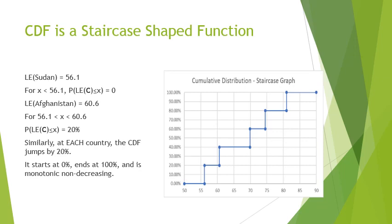At 56.1, the graph has a jump. For numbers between 56.1 and 60.6, there is only one country with life expectancy below these numbers — Sudan — since the next country is Afghanistan at 60.6. If x is in this range, only Sudan's life expectancy is less than x, so the probability is 20 percent. The CDF equals exactly 20 percent for all numbers between 56.1 and 60.6.